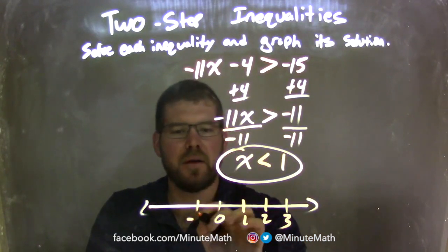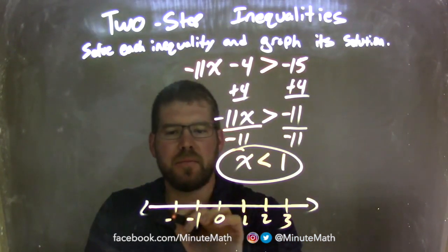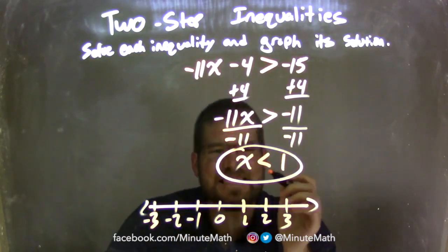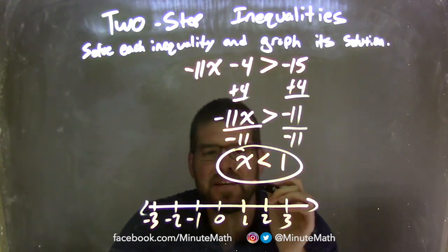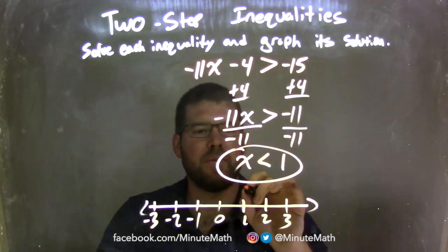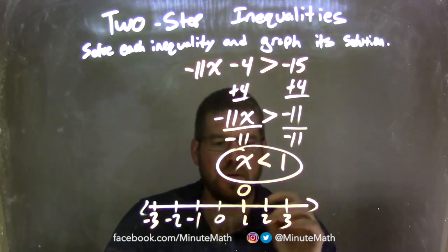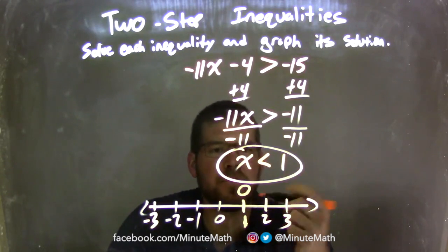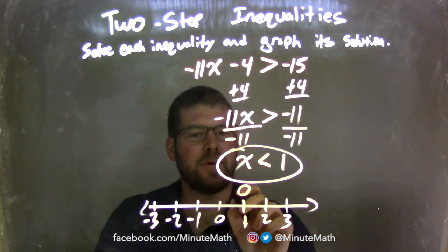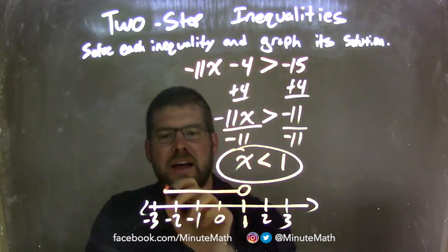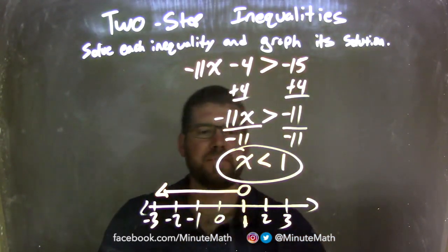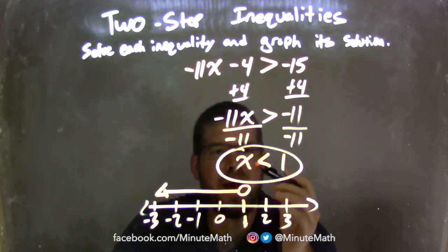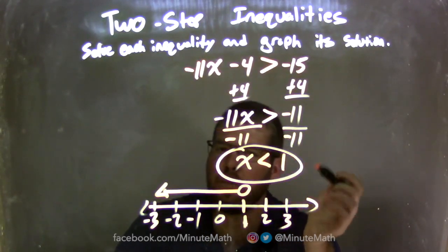Now I have to graph this. Going by 1s: 0, 1, 2, 3, and negative 1, negative 2, negative 3. x is less than positive 1, so we have an open circle at 1 because it's not equal to. Our arrow goes to the left because x is less than 1. We have a graph that represents where x is less than 1.